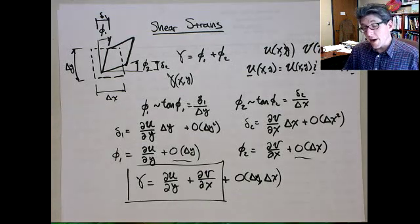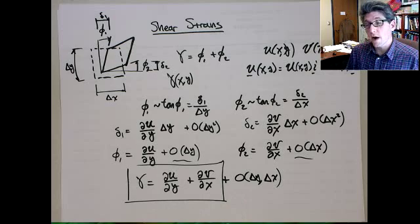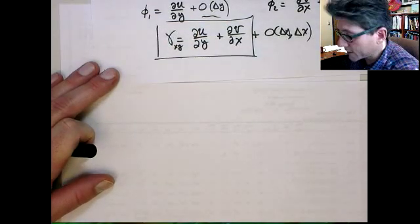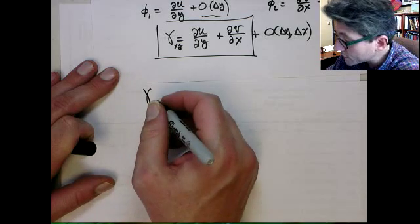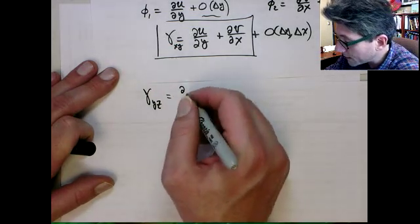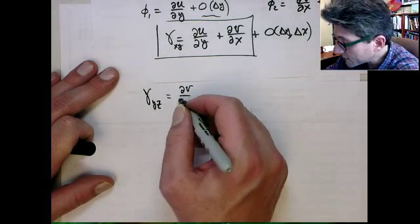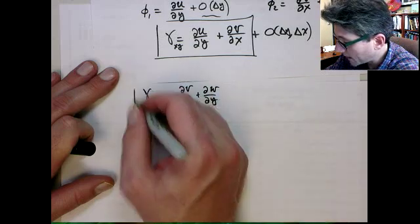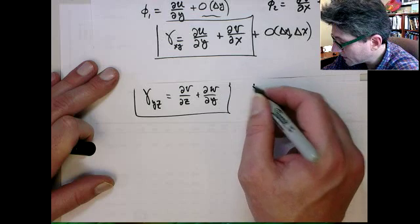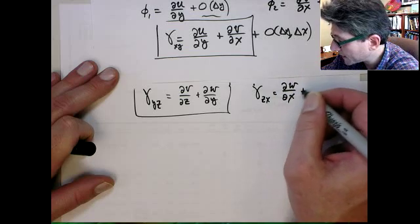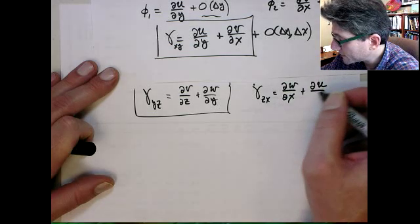It's purely a function of the deformation, defined at a point, obtained directly from the displacement fields. In general, for a three-dimensional case, this is the engineering shear strain in the xy plane. Likewise, you could also have the engineering shear strain in the yz plane — from analogy, that would be the partial derivative of the displacement in the y direction with respect to z, plus the partial derivative of the displacement in the z direction with respect to y. And then also the engineering shear strain in the zx plane, which is the partial of the z displacement with respect to x, plus the partial of the x displacement with respect to z.